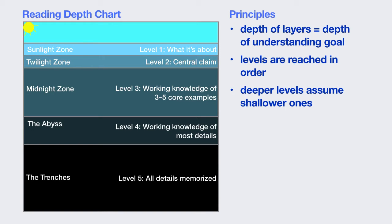Here's another important principle: if you have a deeper level of understanding goal, it assumes that you also have the shallower levels covered. So if your goal is level three — a working knowledge of three to five core examples — it assumes you also know the central claim and can articulate what the text is about.